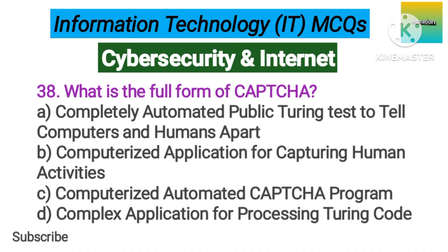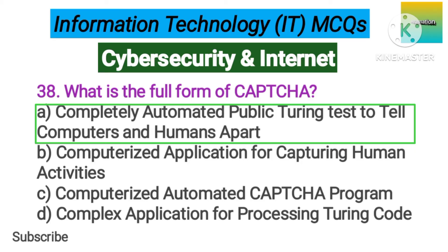Number 38. What is the full form of CAPTCHA? Option A: Completely Automated Public Turing Test to Tell Computers and Humans Apart. B: Computerized Application for Capturing Human Activities. C: Computerized Automated Capture Program. D: Complex Application for Processing Turing Code. The correct answer is option A.